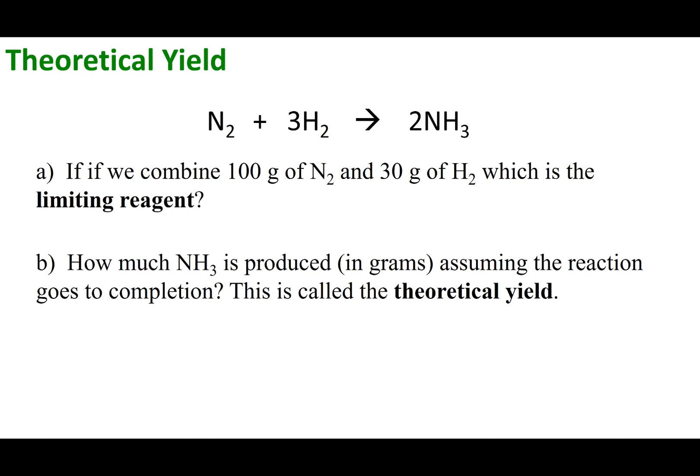Follow this balanced chemical reaction. I'm giving you 100 grams of nitrogen and 30 grams of H2. First, calculate the limiting reagent. Next, calculate the theoretical yield in something that I can measure, in terms of grams. When you're done, mark the right answer.